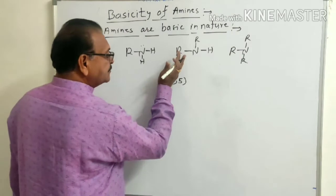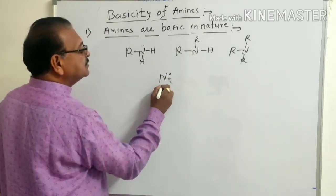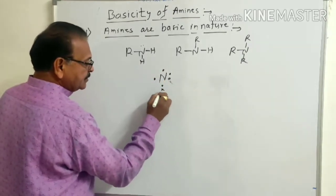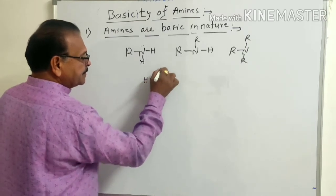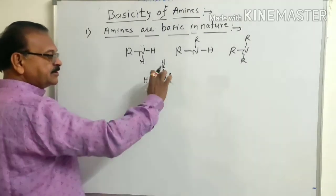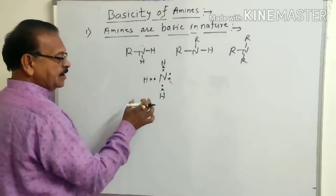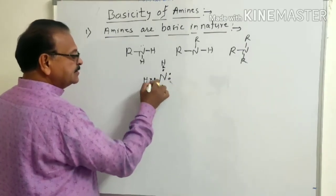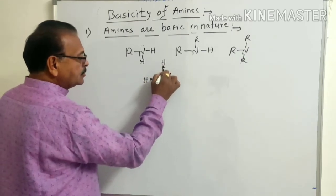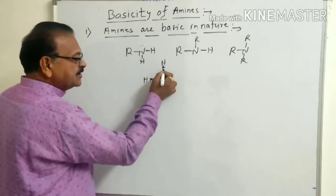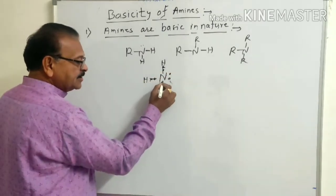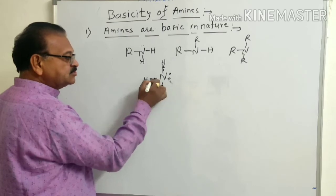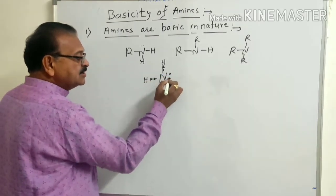As nitrogen contains 5 electrons in its outermost shell, we can observe here these are the 5 electrons of the nitrogen atom, where it is bonded to 3 other atoms like hydrogen. So it becomes ammonia. To complete the octet, we need 3 more electrons and 3 covalent bonds. These are the shared electron pairs, and this is the unshared electron pair.